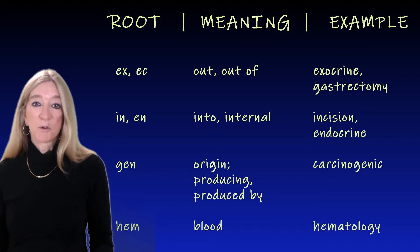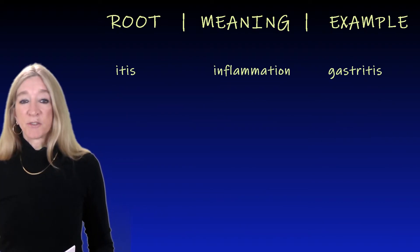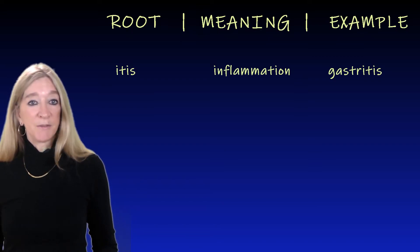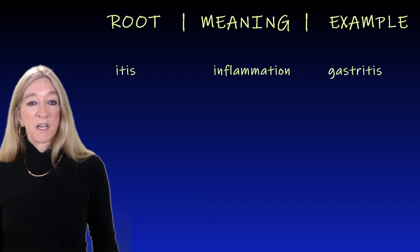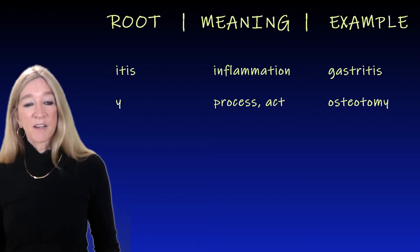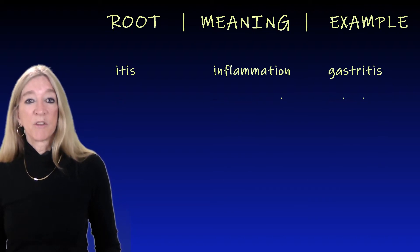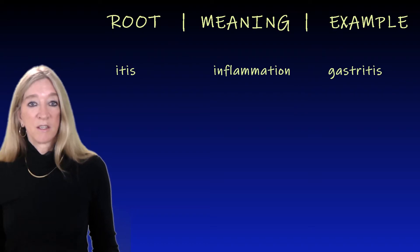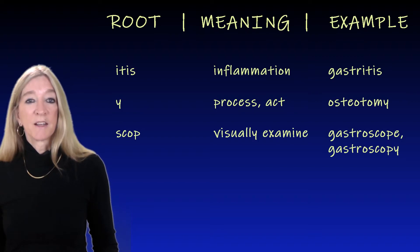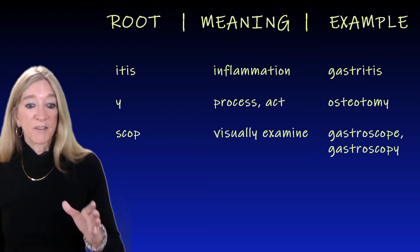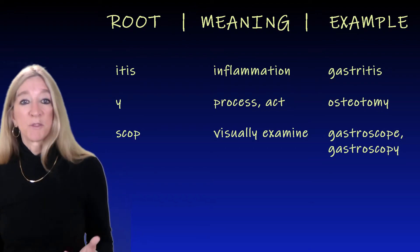The next root, 'hem,' meaning blood. Hematology, the study of blood. The next root, 'itis,' meaning inflammation: gastritis, inflammation of the stomach. The next root, '-omy,' means an act or a process, as in osteotomy, which is surgically cutting the bone. The next root is 'scope' or 'scop,' meaning to visually examine. Gastroscopy is the act or process of visually examining the stomach through a tube, or through a gastroscope. The same root as in telescope and microscope.